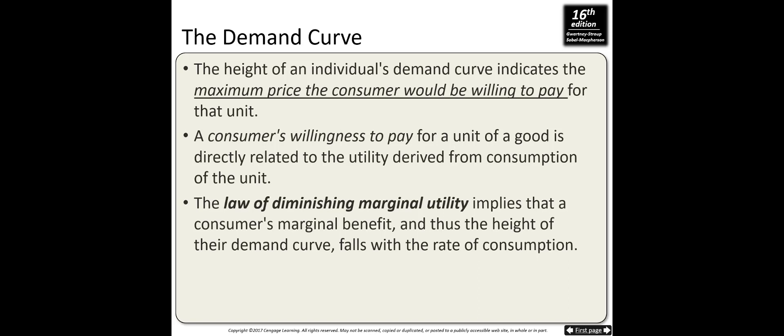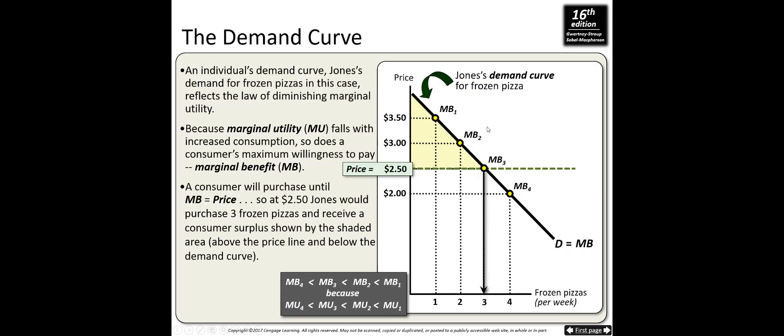The law of diminishing marginal utility implies that a consumer's marginal benefit, and thus the height of their demand curve, falls with the rate of consumption. On the figure you see on the screen, Jonas's demand curve for frozen pizza shows that Jonas is willing to pay $3.50 for the first pizza and $3.00 for the second pizza. The height here represents the marginal benefit of consuming each pizza.